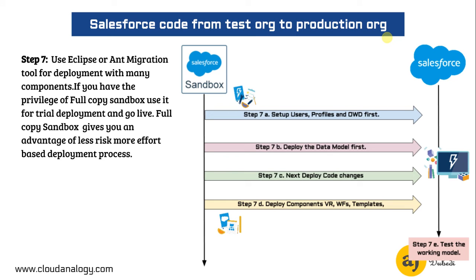Step 7 is defined in several smaller steps. During deployment, our strategy should be: first, move users, profiles, and other mandatory things that form the company detail. Second, move the data model. Once you are done with users, profiles, and OWD, move the data model. After moving the data model you may again need to work on OWD — organization-wide defaults — but it's a good practice to have profiles and users in place before the data model.